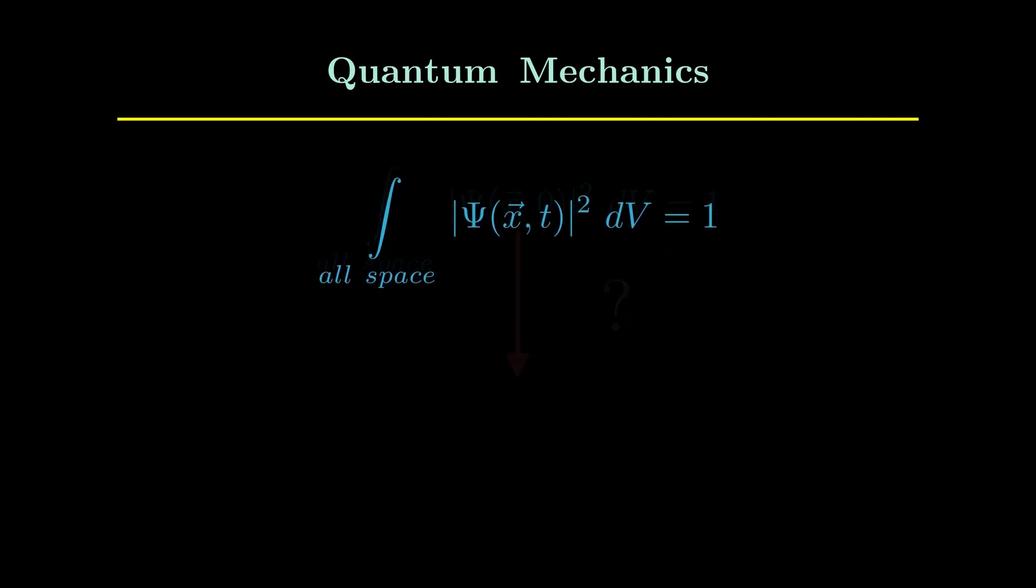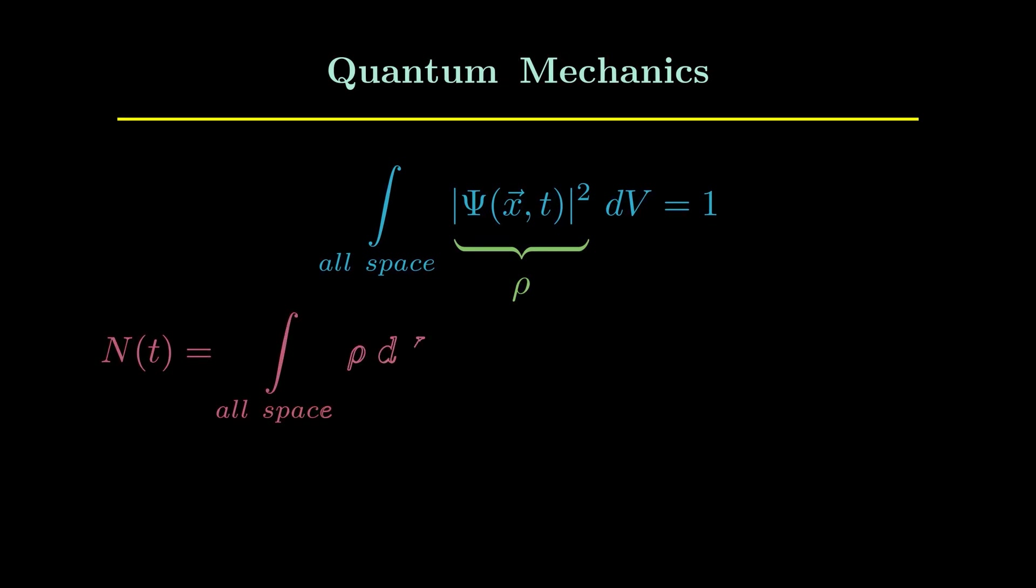So to prove this, what we will consider is we will let's say that this norm ψ square is some kind of probability density—let's call it ρ. Then we define some N(t) is equal to this integral, and what we will try to prove is that dN/dt is equal to zero, since that is essential to prove that N(t) is constant and is equal to one.